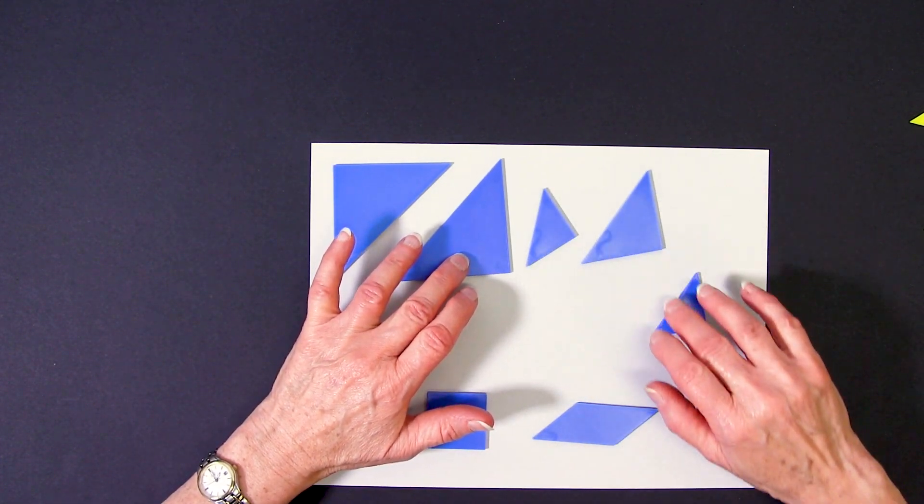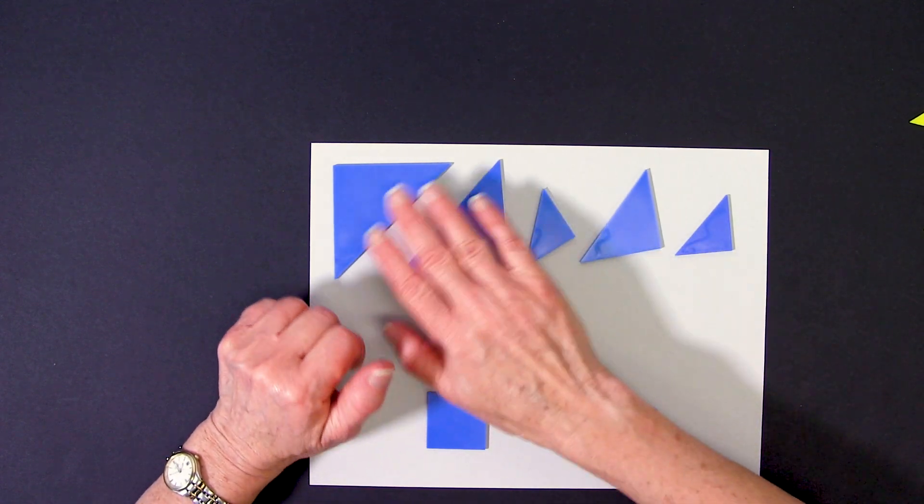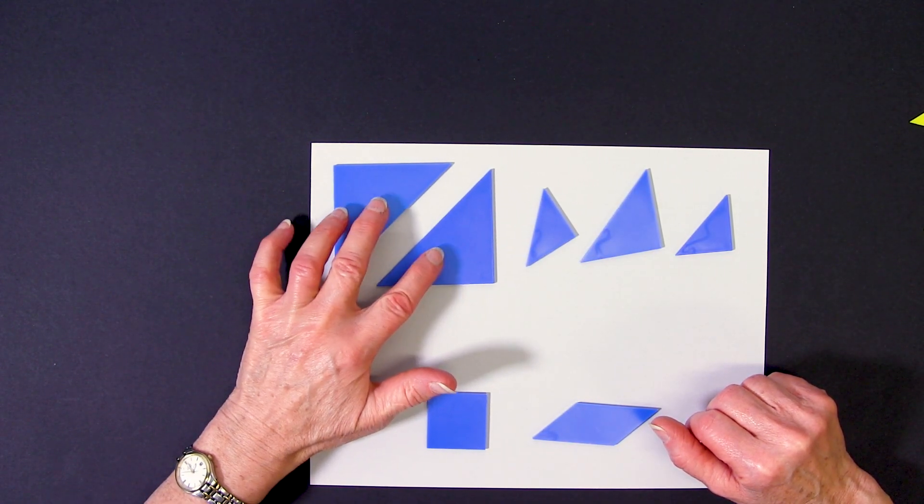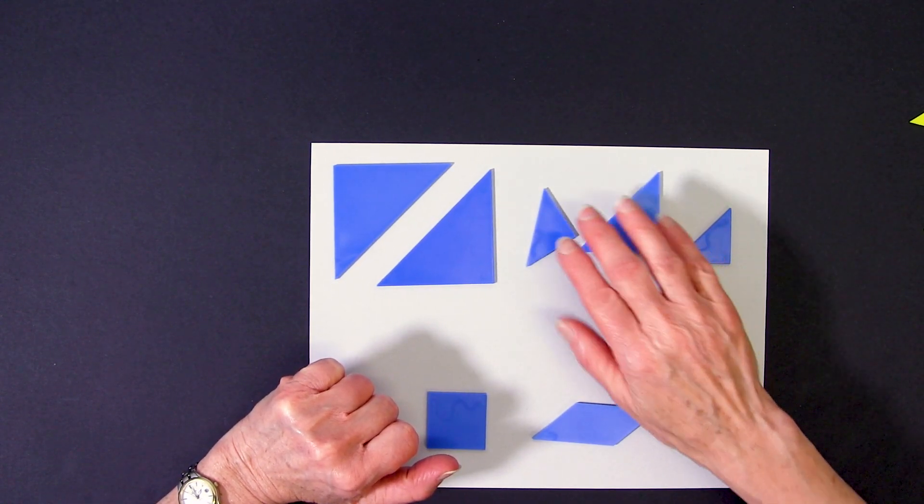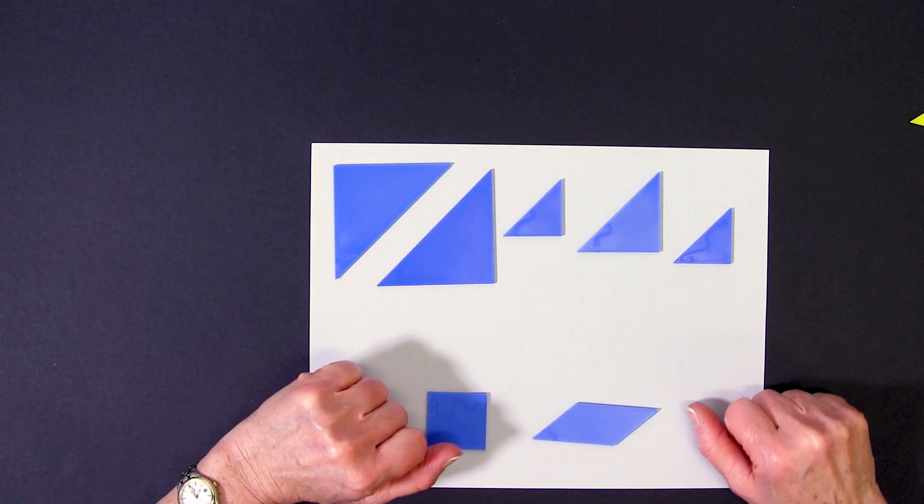You will notice that there are five triangles in the set: two large, one medium, and two small, and each triangle is a right angle triangle.